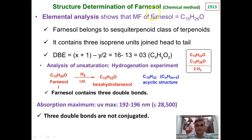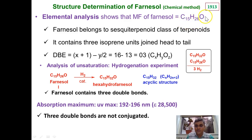Structure determination of Farnesol was initiated in the year 1913. At that time chemists were not having sophisticated tools and therefore relied on chemical analysis. Starting with estimation of carbon and hydrogen, they derived the empirical formula and then the molecular formula of Farnesol, found to be C15H26O. This molecular formula tells us there are 15 carbon atoms, meaning 3 isoprene units, which according to the special isoprene rule are joined through head-to-tail linkage. Since it contains 3 isoprene units, Farnesol belongs to the class of sesquiterpenoids.